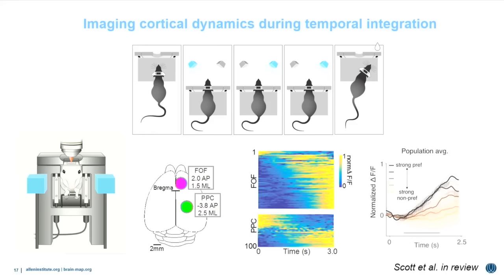Here you can see examples of neuron dynamics recorded, averaged across trials. The key feature is that we can recapitulate the same types of dynamics observed in the clicks version of the task: neurons in FOF encode the difference between the left and right flashes across the population. So how do they do that?